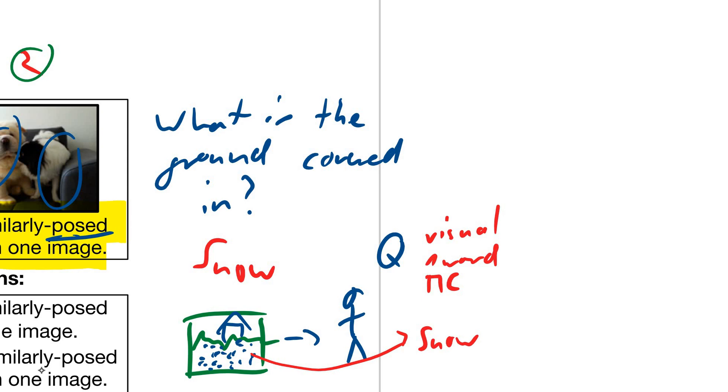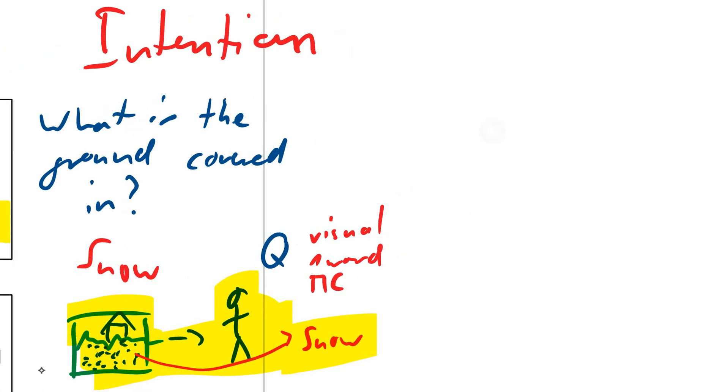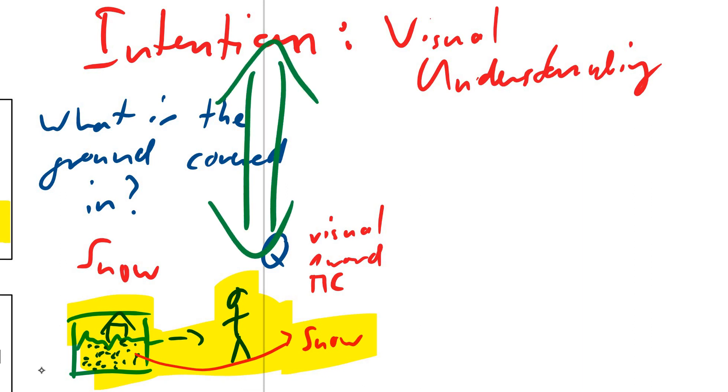So the problem is mainly the process of data set generation. That will lead to kind of biases and easy solutions for the models, where the models will simply learn statistical correlations between things and the intention. So we have a big divergence between the intention of what the data set creators want. The intention in this case is visual understanding of the world, and there's a big difference between this and between how the data set is really constructed.